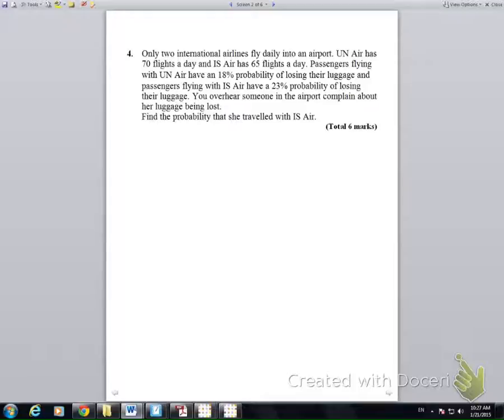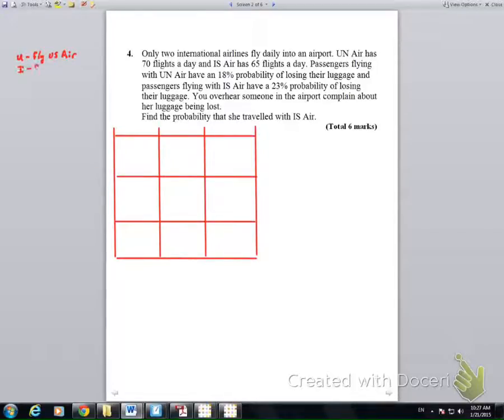We can take that information and construct a conditional probabilities table as follows. We have people who fly US Air, people who fly IS Air, people who lose their luggage, and people who don't lose their luggage. We arrange it in a table as shown.